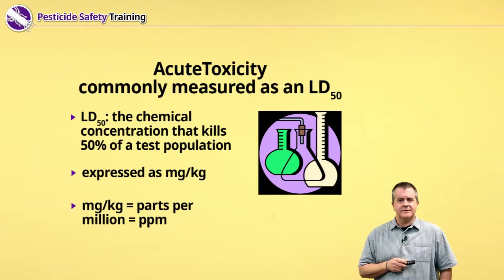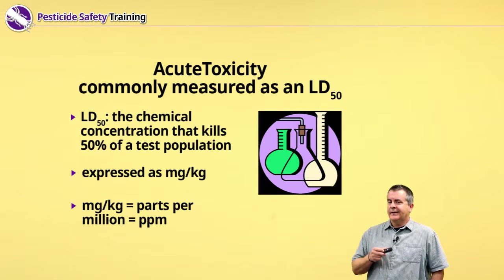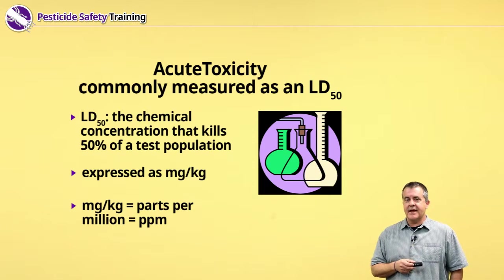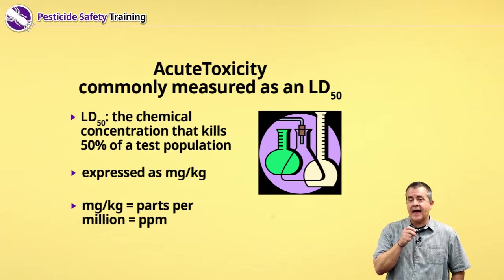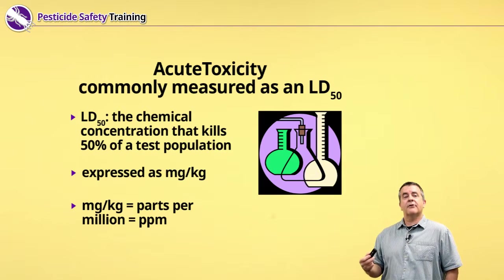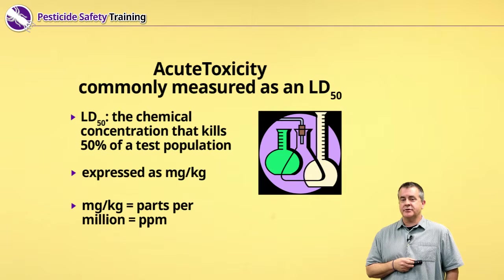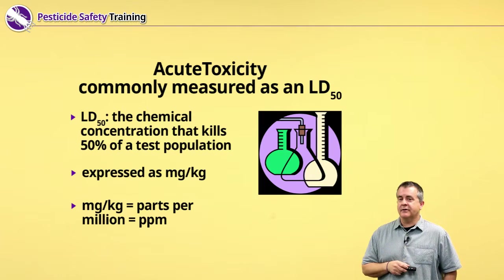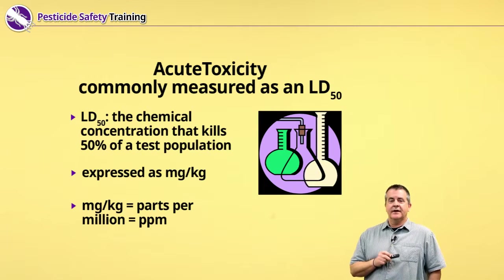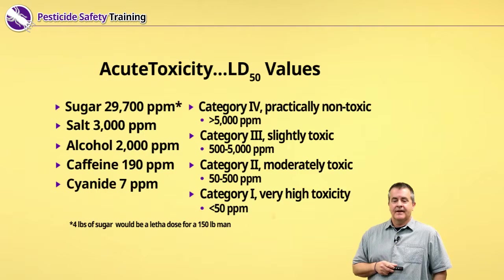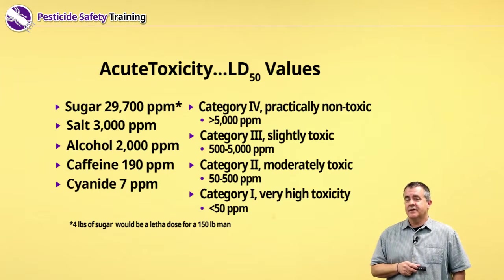All of these things mean the same thing. So the LD50 value — if I say it's 10 milligrams per kilogram — what I'm saying is it takes 10 milligrams of that chemical per kilogram of rat weight to kill 50% of that rat population. Don't get confused: there's nothing magical about the 50. It's just an arbitrary number that scientists use to compare the toxicity of one compound to another.